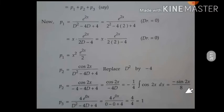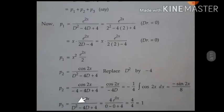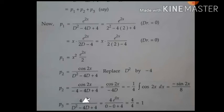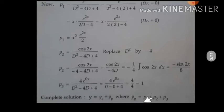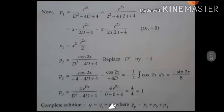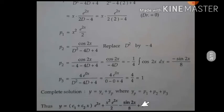For P3, the constant term: convert it to Type 1 by multiplying with e^(0x). Wherever d appears, replace it by 0. So 4 / (0 − 0 + 4) = 4/4 = 1. The complete solution is y = yc + yp, where yp is P1 + P2 + P3 substituted in.